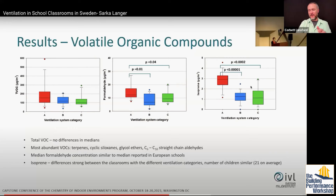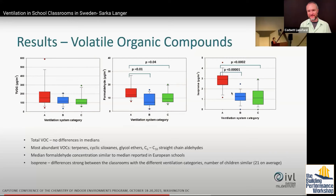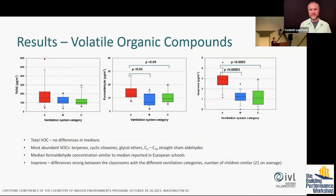Isoprene is a compound given off by living beings — plants and animals. If you have isoprene, you know something alive is off-gassing; you could think of it as a kind of BO. The concentration of formaldehyde in these Swedish classrooms was similar to medians reported in other European schools. For isoprene, the differences were strong, and the number of children in each classroom was quite similar, so the differences can't be attributed to occupant count.